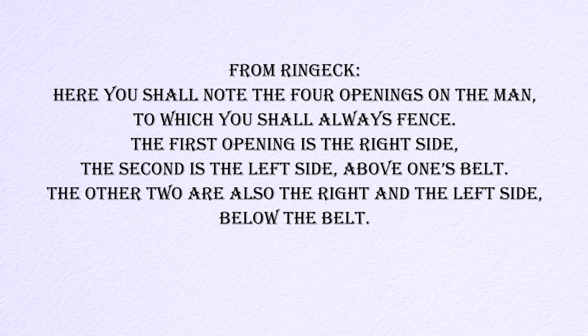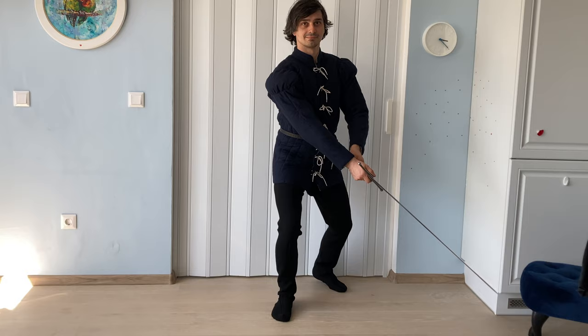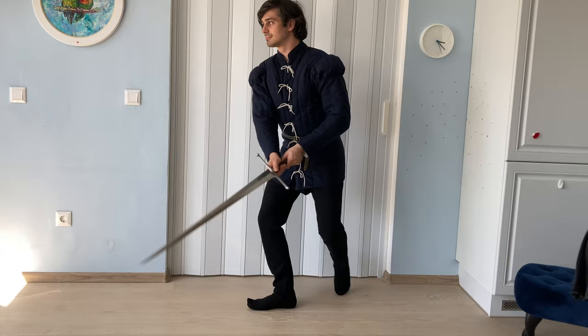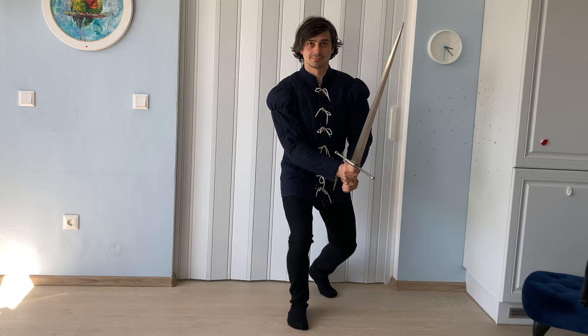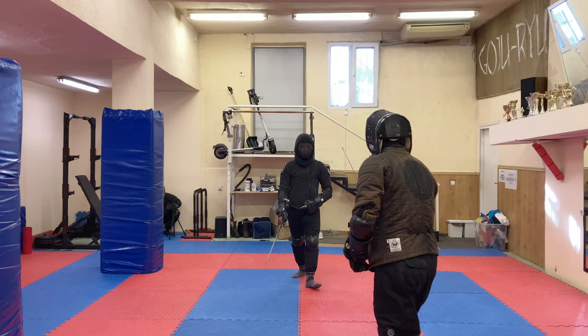The first opening is the right side, the second is the left side above one's belt. The other two are also the right and the left side below the belt. This would usually mean the lower part of the torso and the legs, but I would say that it can also include the hands and forearms when they are staying in a low position.